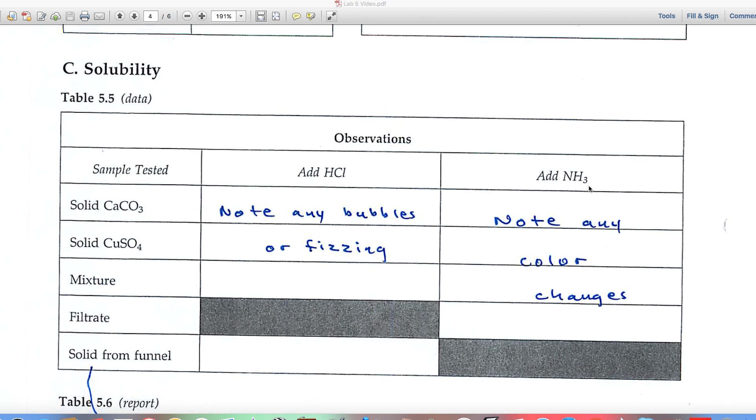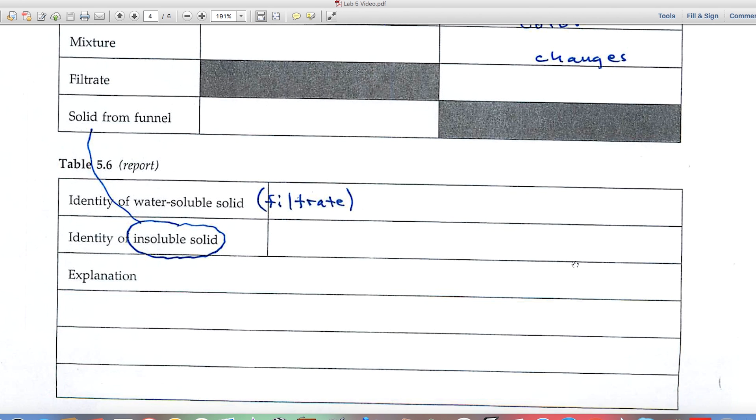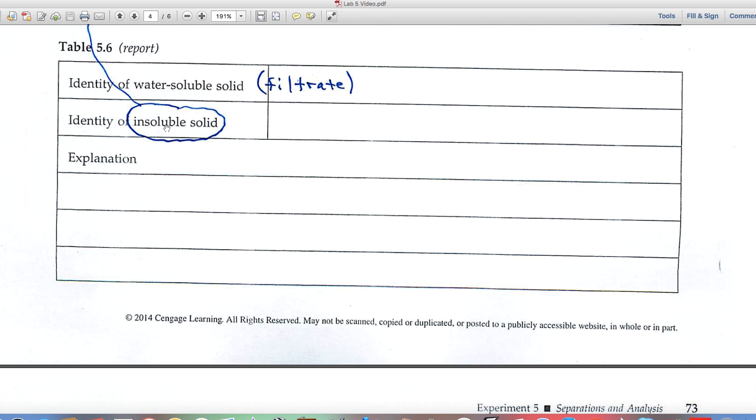Over here we'll be adding NH3, and this time it produces a color change. So note any color changes. And you'll be testing the filtrate and see what color is produced and whether it correlates with the copper sulfate or the calcium carbonate. Use that information to identify the water soluble substance, the filtrate, and the insoluble solid that collected in the funnel. And of course the explanation would be that the behavior of the insoluble solid acted like whatever it is that you identified it as, and the same with the filtrate, that its behavior acted like the other one.